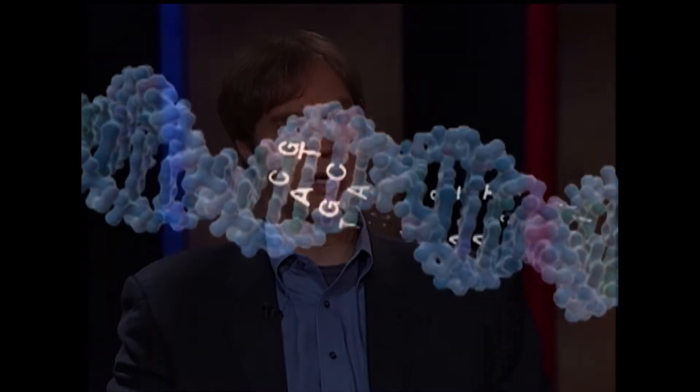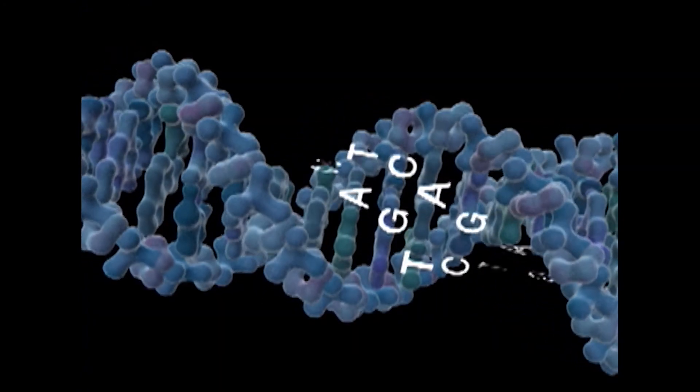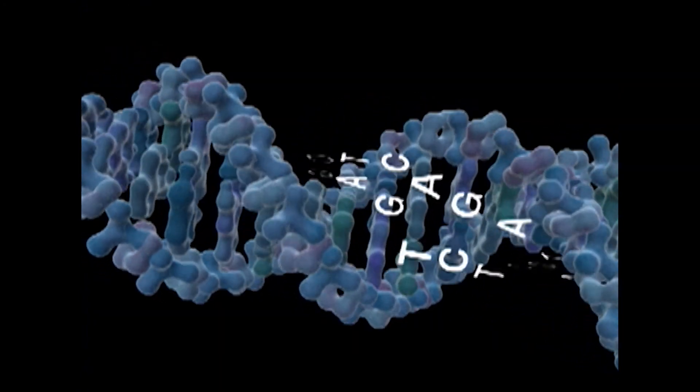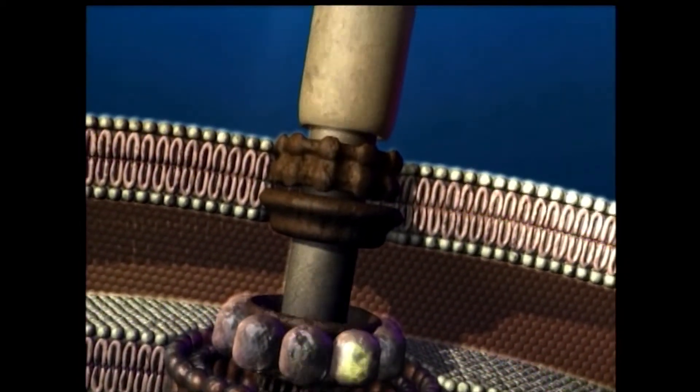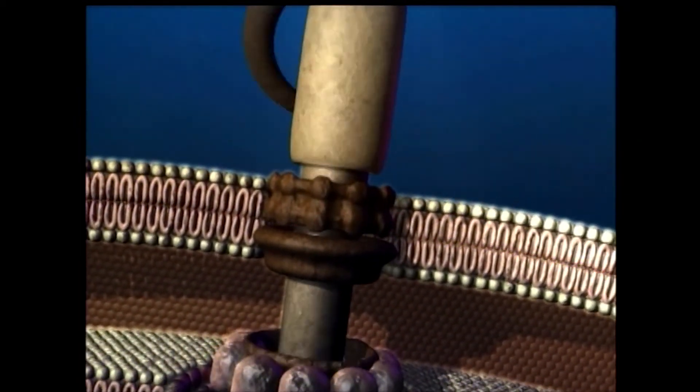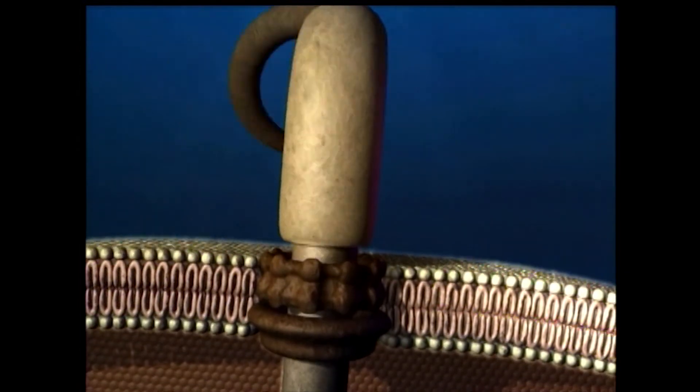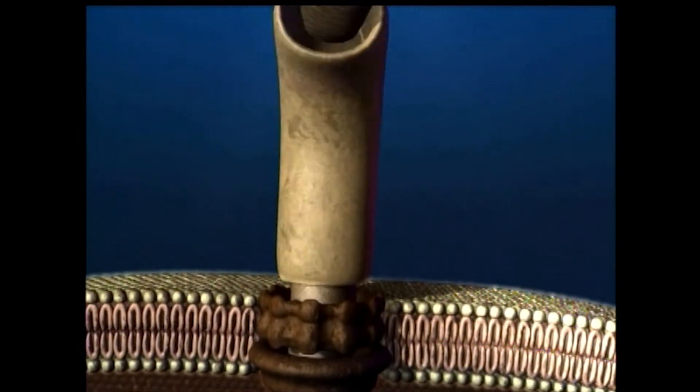Inside cells, we don't have little sculpted faces, but we have other indicators of intelligence: digital code, complex nanotechnology, little tiny miniature machines — things that we would, in any other realm of experience, attribute to intelligence. So our argument is that what we see in biology doesn't give just the appearance of design. It's actually giving us evidence of an actual designing intelligence.